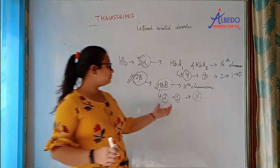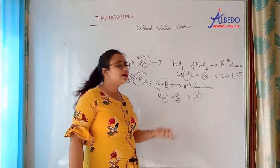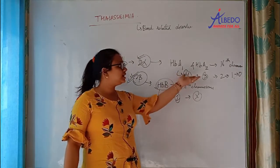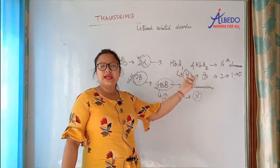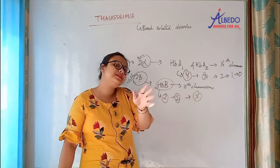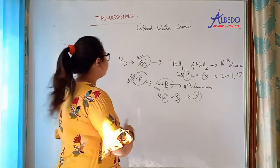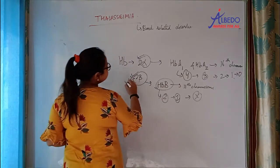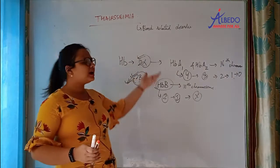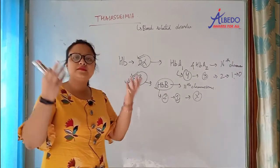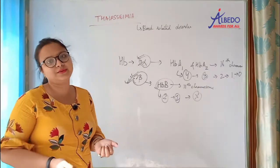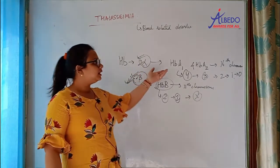If one allele is wrong, I will go into a carrier state. But for the alpha chain, I have 4 alleles — if one or two are wrong, two or three will still do the work. So obviously, beta thalassemia is more important clinically. Alpha thalassemia cases are not diagnosed as often because they are less severe.